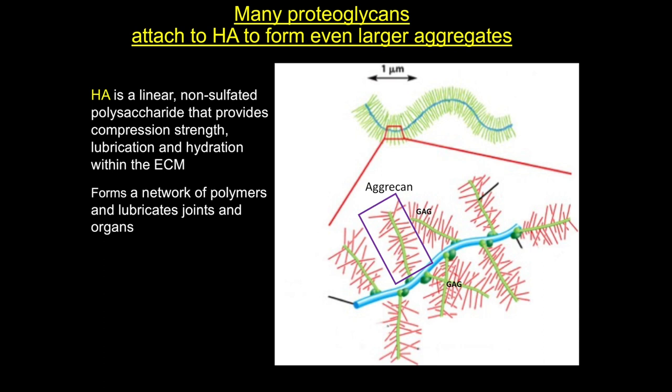An example is aggrecan, a proteoglycan found in cartilage and connective tissue that attaches to hyaluronic acid. Because hyaluronic acid is so long, the resulting aggrecan composite occupies an enormous volume and has an enormous mass. This is in large part responsible for the gel-like state of the ECM and is particularly important in joints.